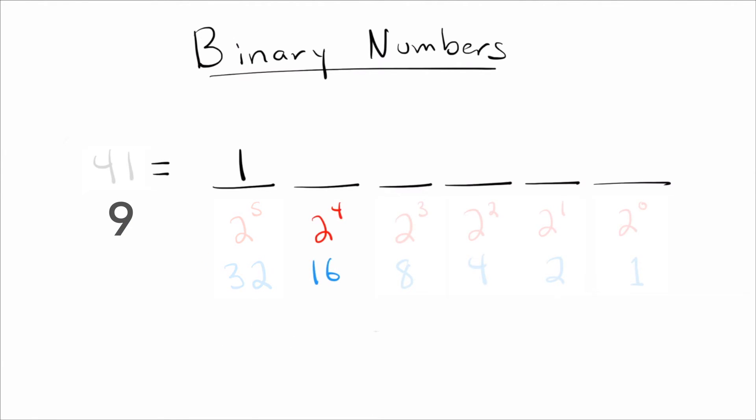How many 16s are in nine? None. How many eights are in nine? There's one of them. Nine minus eight, I'm just left with one. So there's no fours, no twos, just a single one left. And there we go. I wrote 41 in binary. It's 101001.